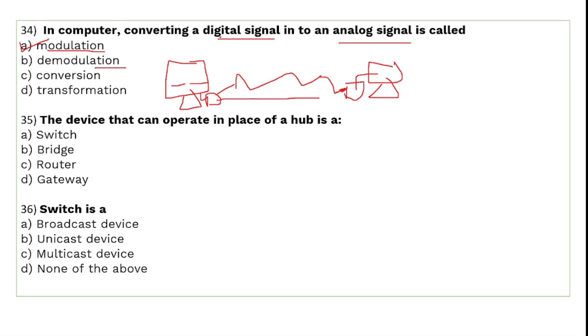To summarize: converting a digital signal into an analog signal is called modulation, and converting an analog signal back into a digital signal is called demodulation.